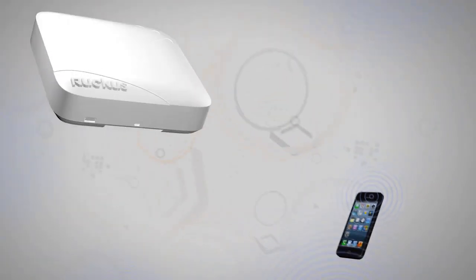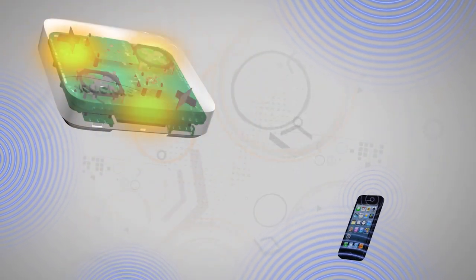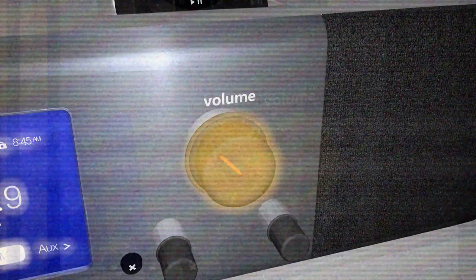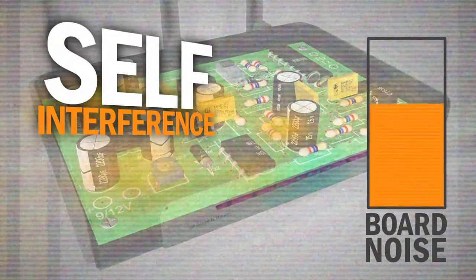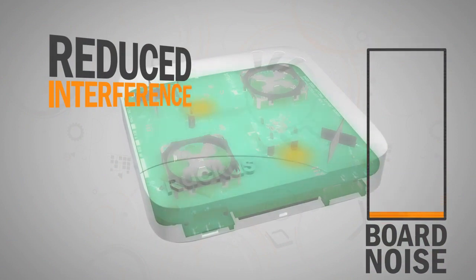To make an access point listen better, the internal noise from electronic components must be controlled and reduced. If you've ever turned up the volume on your stereo without playing music, that's static noise. In Wi-Fi, this system noise results in self-interference. Reducing this interference is essential.